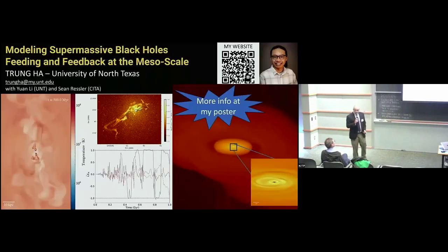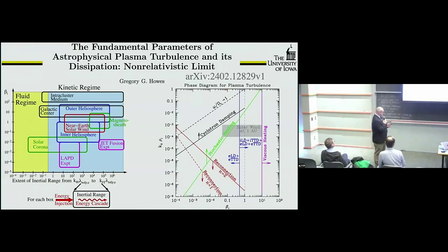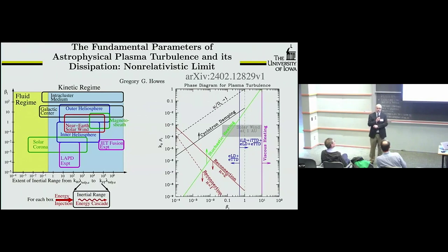My name is Greg House from the University of Iowa. I have a poster called 'The Fundamental Parameters of Astrophysical Plasma Turbulence and its Dissipation in the Non-Relativistic Limit.' If you're having trouble sleeping you can get it on arXiv — I just finished it Monday night at midnight; it's about 70 pages long, so no matter how bad your insomnia is it will be a solution.